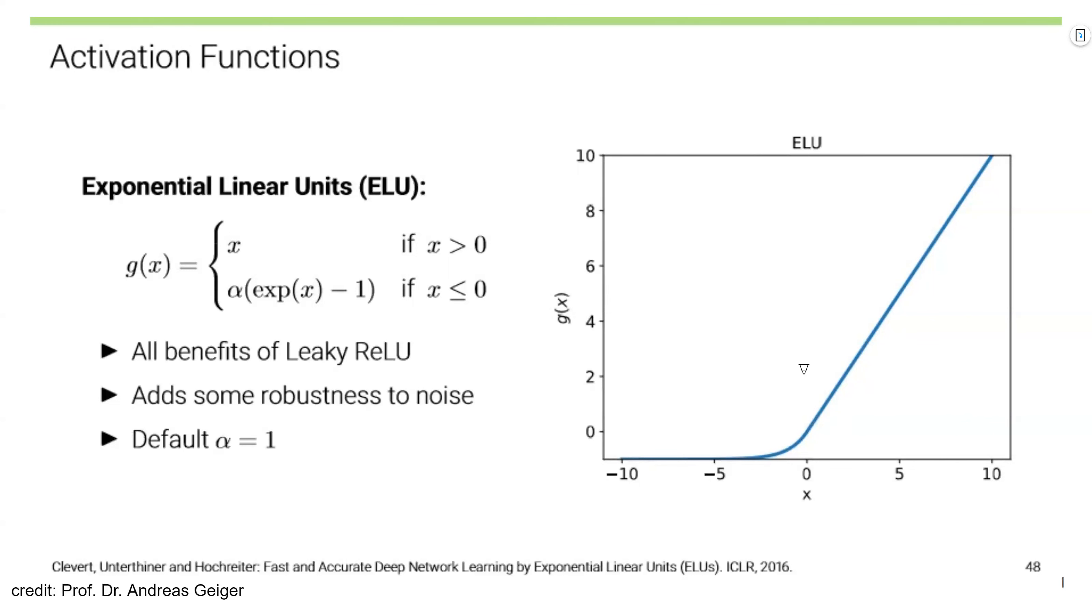There is another variation of Rectified Unit, Exponential Linear Unit, ELU. Here, we have continuous slope. So it contains all benefits of leaky ReLU. And it has some robustness to noise. The default value of alpha is 1.